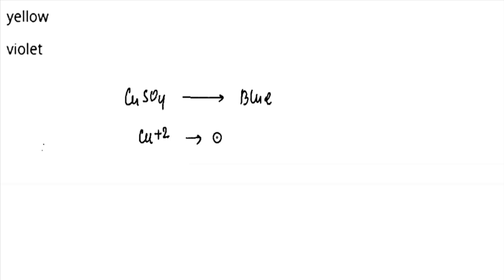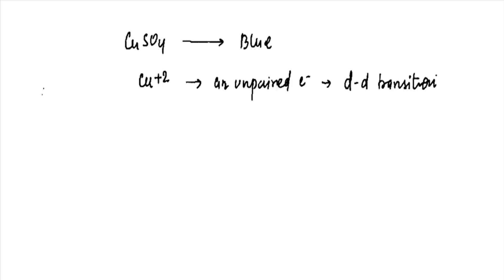Cu2+ ion has an unpaired electron, and that unpaired electron shows d-d transition. Now, what exactly is the d-d transition?